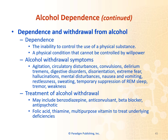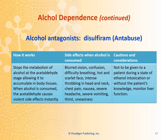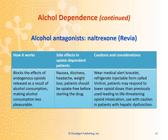Treatments for alcohol withdrawal may include benzodiazepines, anticonvulsants, beta blockers, or antipsychotics. Campral is another drug used to treat alcohol dependence; it's called an alcohol antagonist and it restores balance between neural excitation and neuronal inhibition, which reduces the negative effects of abstinence from alcohol. Antabuse stops the metabolism of alcohol at the acetaldehyde stage, allowing it to accumulate in body tissues; when alcohol is consumed, it causes violent side effects instantly, normally including vomiting. Revia blocks the effects of endogenous opioids released as a result of alcohol consumption, making alcohol consumption less pleasurable.